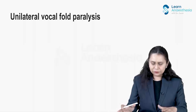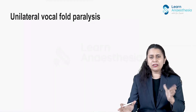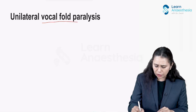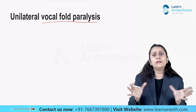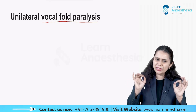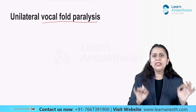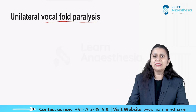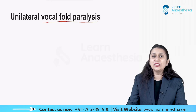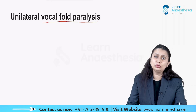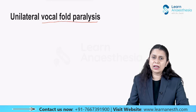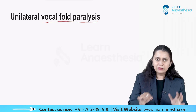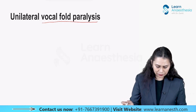Let us talk about what happens when unilateral vocal cord paralysis happens. When you see the term vocal cord paralysis, think of it as recurrent laryngeal nerve paralysis — vocal cord paralysis is essentially synonymous with recurrent laryngeal nerve paralysis.